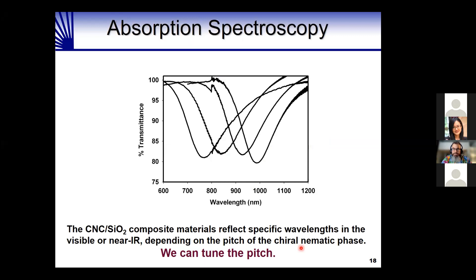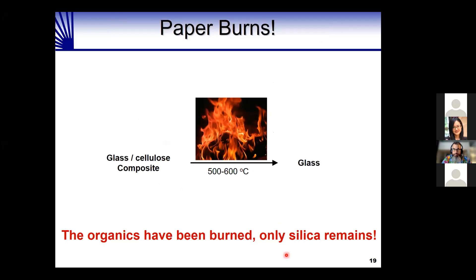What we have is a film of about half cellulose nanocrystals and half silica. By changing the ratio of cellulose to silica, we can change the wavelength of light reflected. Here are absorption spectra for four different films — each showing a different reflection wavelength, meaning a different helical pitch. We can tune the pitch to change the color. The next step is to burn it: we cook it at 600°C, which destroys all the organics and leaves us with pure silica — pure glass.